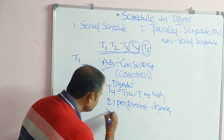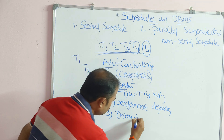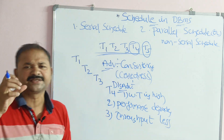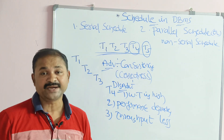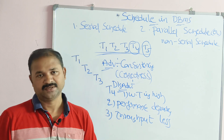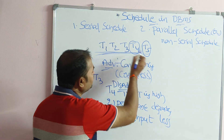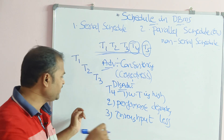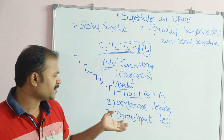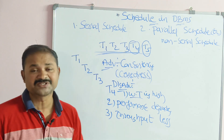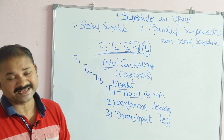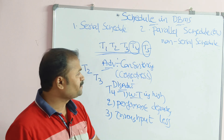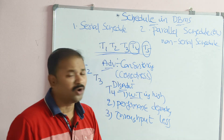Throughput is also very less. Throughput means the number of transactions executed per time unit. Here we are not able to execute many transactions in a speedy manner, so waiting time is very high, performance is poor, and throughput is very less. In order to overcome all these problems, we use the second type: parallel schedule or non-serial schedule.